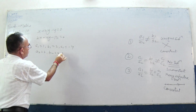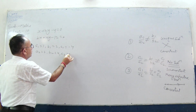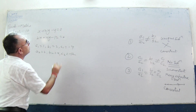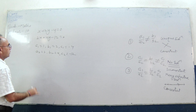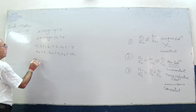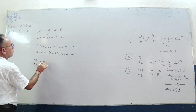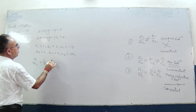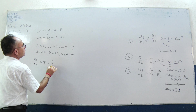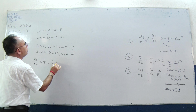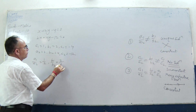B2 equal to 4, C2 equal to negative 12. Now comparing the ratios: A1 by A2 is 1 by 2, and B1 by B2 is 2 by 4.